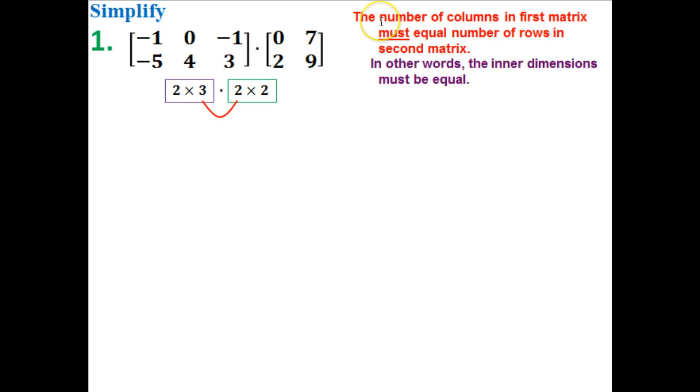The technical rule is the number of columns in the first matrix must match the number of rows in the second matrix. Basically, these two middle numbers have to match. If these two middle numbers do not match, we cannot do this problem. The inner dimensions must be equal.